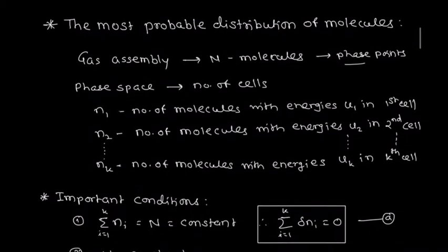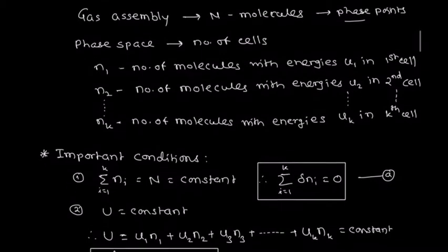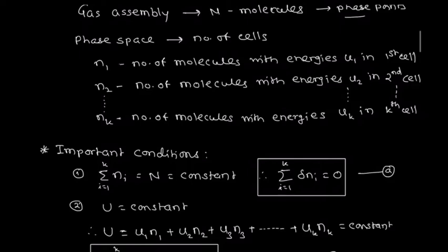Now we write some important conditions. The first one is that in a given assembly the total number of gas molecules always remains constant, therefore we write the summation i equals 1 to k of δni equals constant N. And if summation i equals 1 to k of δni equals 0, this is the first condition.